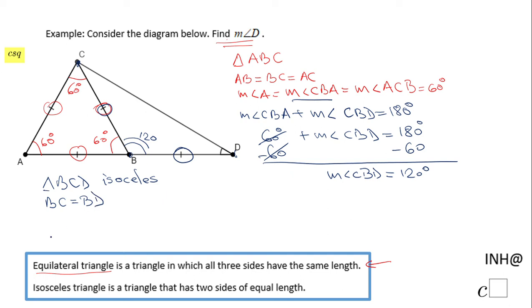That means these two base angles are congruent and have the same measure. The measure of angle D equals the measure of angle BCD, and I'm going to call them both X, because it will be easy to work with.